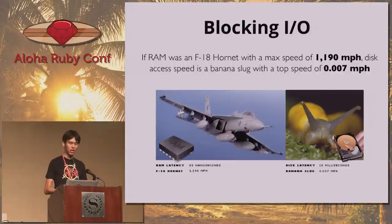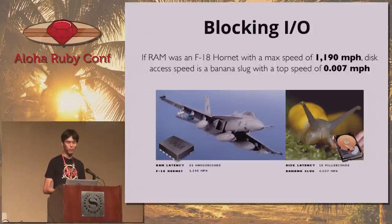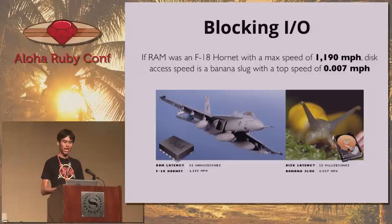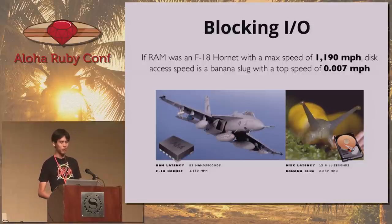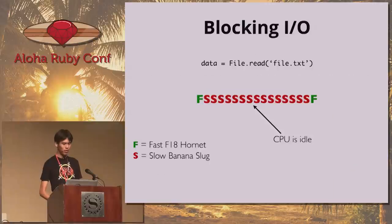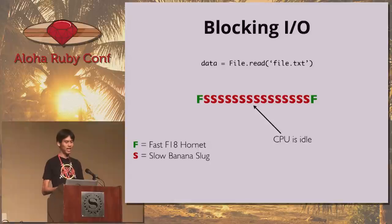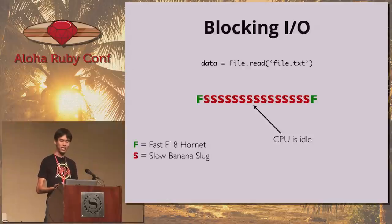As far as blocking I/O goes, I love this quote from Christian Paredes: if RAM was an F-18 Hornet with a max speed of 1,200 miles an hour, then disk access speed is a banana slug with a top speed of 7,000th of a mile per hour. Intuitively we know that CPU is faster than memory, memory faster than disk, and disk faster than network access. Whenever there isn't data available for the CPU to process, we have to idle the CPU and wait. The OS and hardware caches hide this from us — when we say file.read, it works as expected, but under the hood the CPU might be idling and wasting processing.